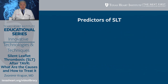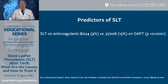From this study, silent leaflet thrombosis on anticoagulants was 4% versus 15% on dual antiplatelet therapy. This is a significantly different number and carries high statistical significance between those two modalities of treatment.